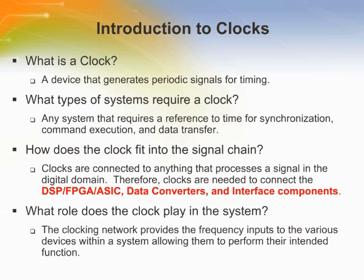At the most basic level, a clock is a device that generates periodic signals at a specific frequency. Systems that need a reference to time for synchronization, command execution, or data transfer will use this periodic signal to perform these functions. Typical devices within the signal chain that perform these functions are those that interface with digital signals, such as the processing unit, which can be either a DSP, FPGA, or ASIC, as well as data converters and interface components such as USB or SERDES. The network of clocking devices provides the frequencies to each of the system blocks so that it can perform its intended function.